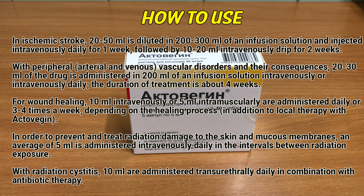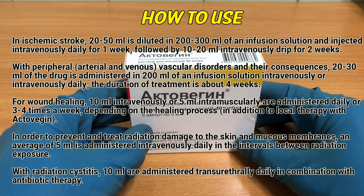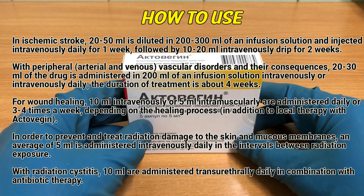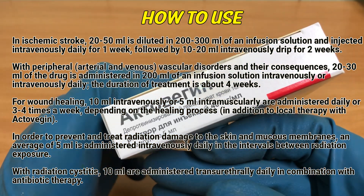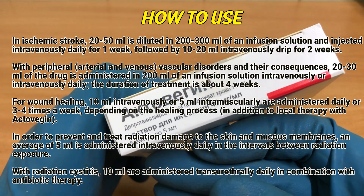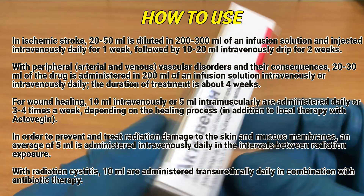With peripheral arterial and venous vascular disorders and their consequences, 20 to 30 mL of the drug is administered in 100 mL of an infusion solution intravenously. The duration of treatment is about 4 weeks. For wound healing, 10 mL intravenously or 5 mL intramuscularly are administered daily or 3 to 4 times a week, depending on the healing process, in addition to local therapy with Activision.